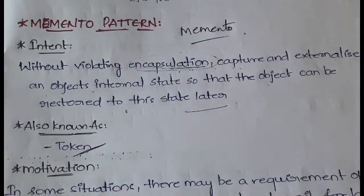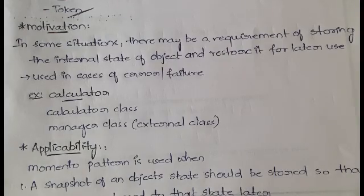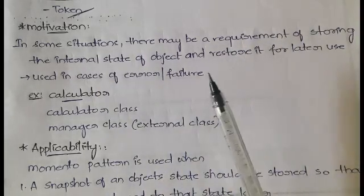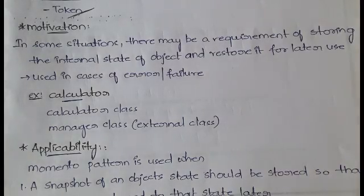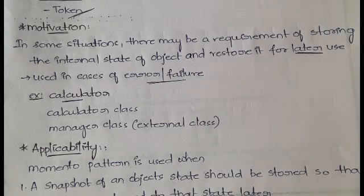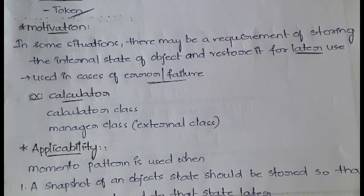The main motivation for this pattern is that in some situations there may be a requirement to store the internal state of an object and restore it later — that is, preserving and saving the internal state. It is mainly used in cases of error or failure. If some error has occurred, you can restore the state of the object to rectify the error. If the system has crashed mid-process, you can use the saved state to recover.